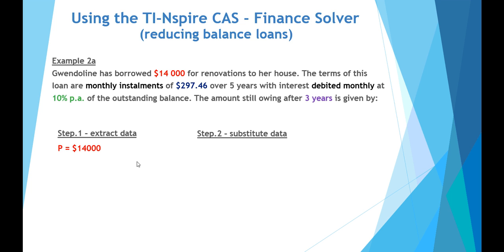Let's, as last time, extract our data. So, the principal's $14,000 that's being loaned. The payments are monthly of $297.46.